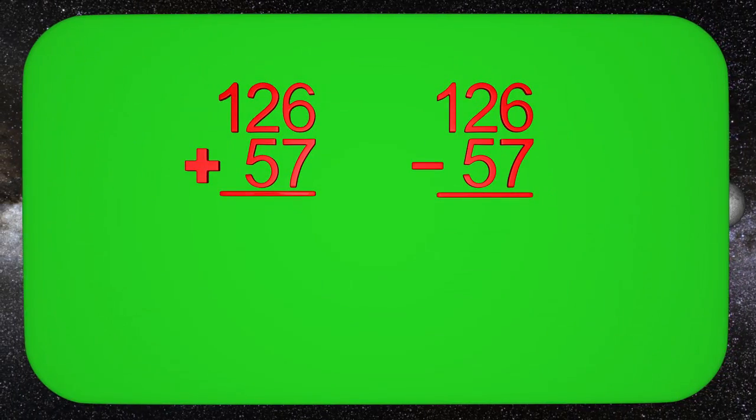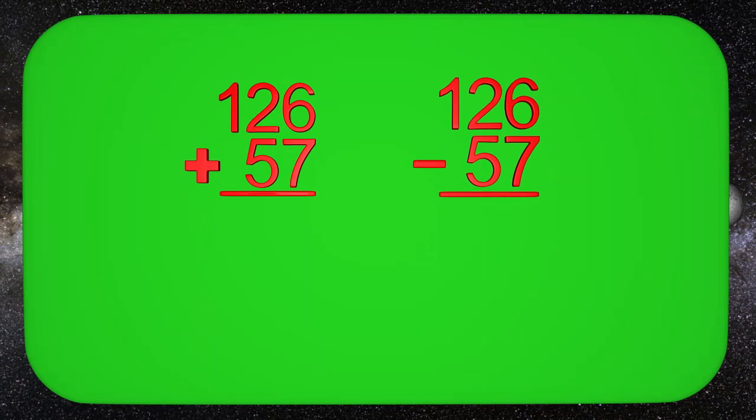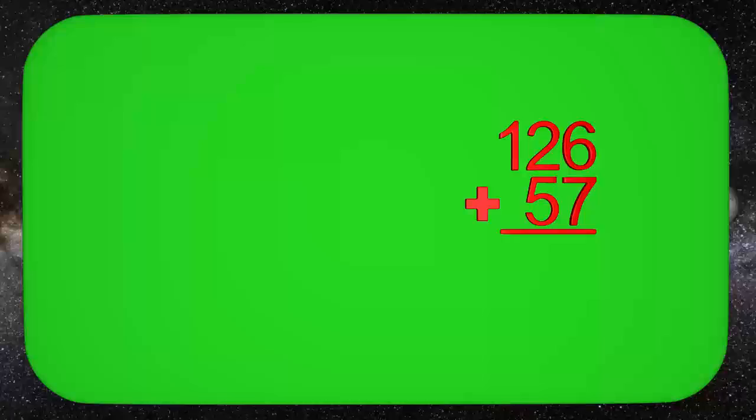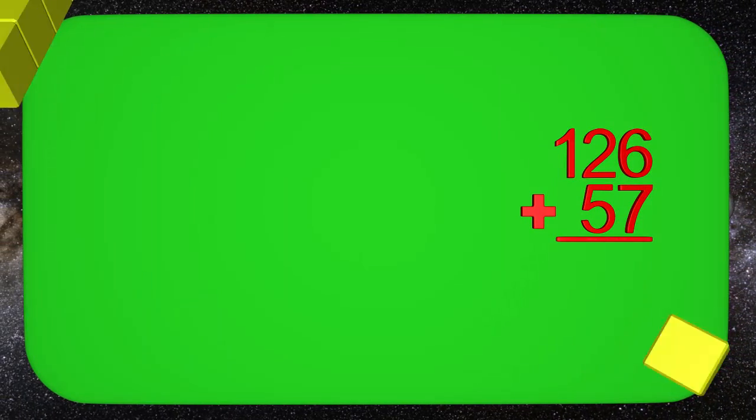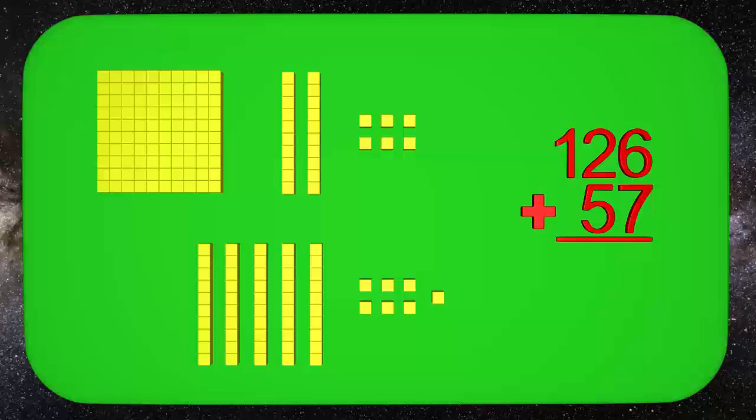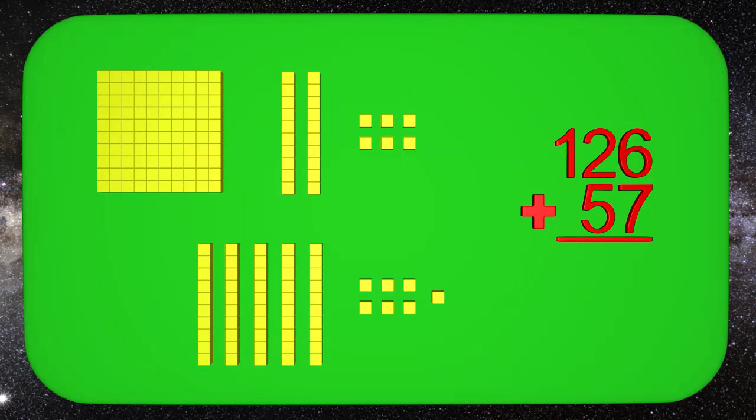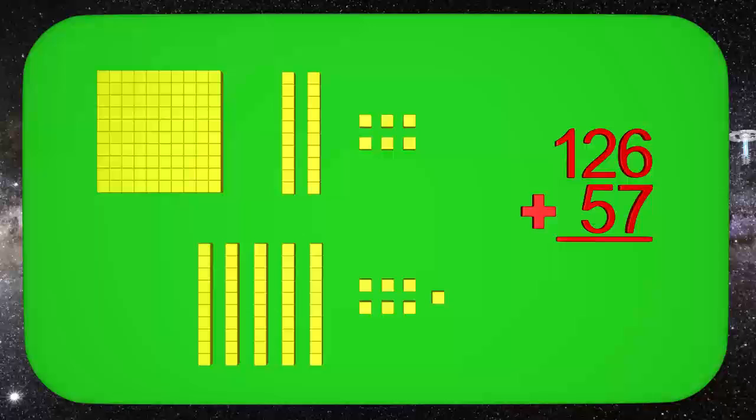Here we have two problems. One is addition and the other is subtraction. Let's work on the addition problem first. Let's solve this problem using our base 10 blocks. Here on top we have 126 and below we have 57. We need to add these together.